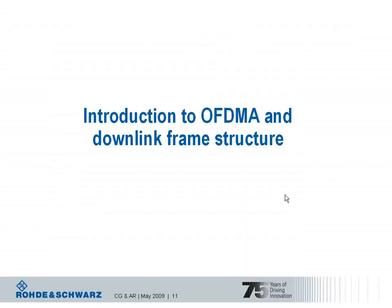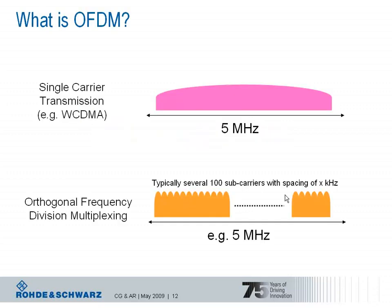Now let's have a closer look at the OFDMA multiple access scheme and the downlink frame structure for LTE. In an OFDMA system, the available bandwidth is subdivided into multiple subcarriers, and each of these subcarriers can be independently modulated. Typically you have several hundred subcarriers in a certain bandwidth with a constant spacing of some kilohertz. The figure shows an example for 5 MHz bandwidth, and you can easily scale the OFDM principle to higher bandwidths as well.